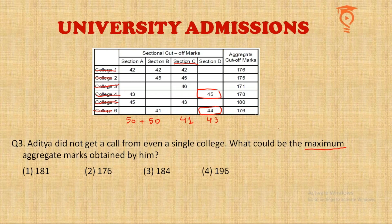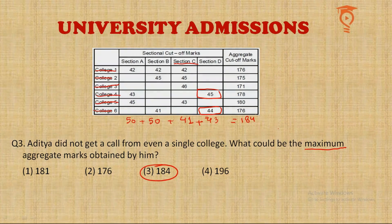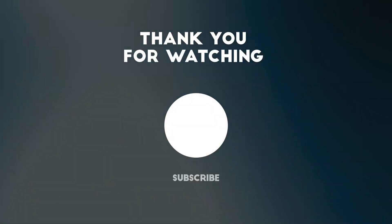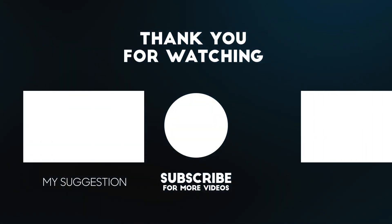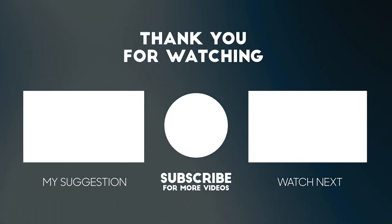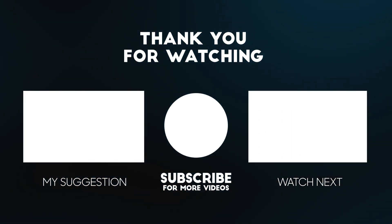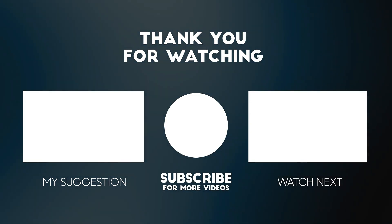Adding all the scores: with 41 in section C and 43 in section D, plus maximum marks in the other two sections, his total comes to 184. So 184 is the answer. Aditya scores 184 marks and yet gets no call from a single college, while Bhama scored only 181 in question one and got calls from all colleges. This illustrates how critical sectional cutoffs are. Thank you so much for watching — please subscribe. This is Mayank Raj Singh signing off. Take care.